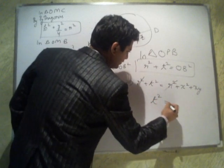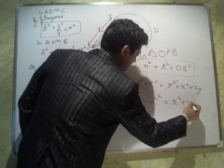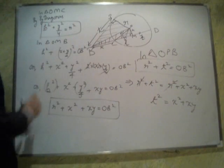And you eventually land up with T square equals X square plus XY. So what was T? T was the length of the tangent.